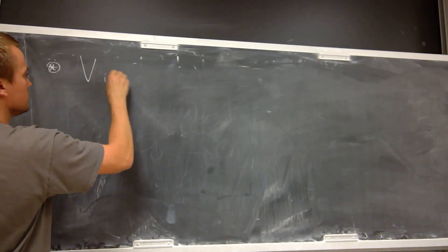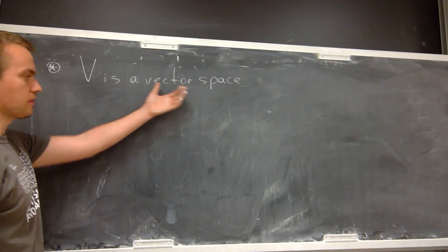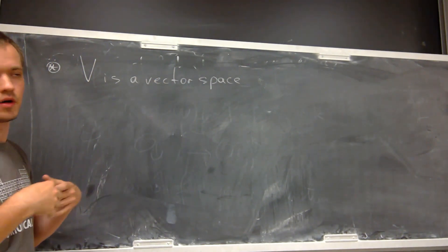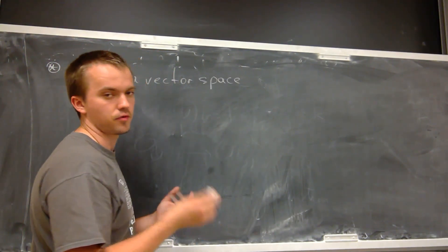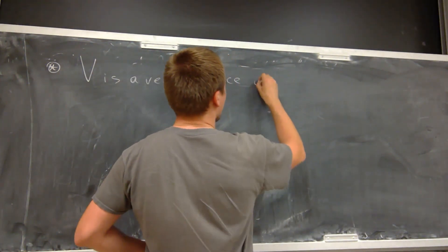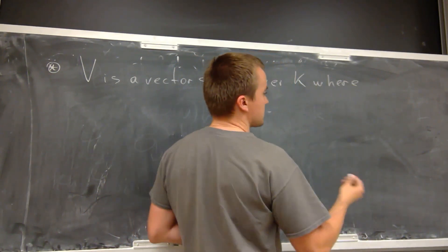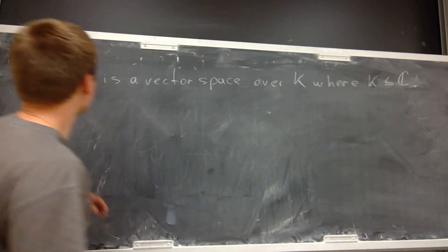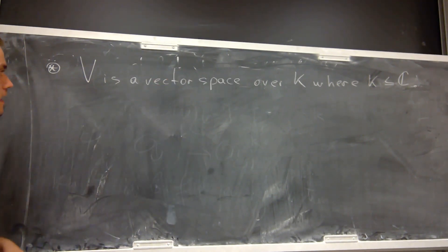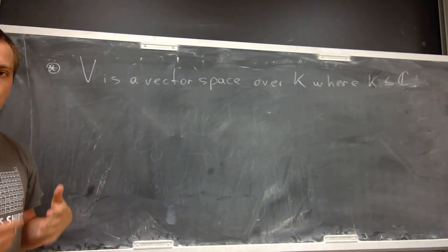Let's say that we have V as a vector space. When we have a vector space, we need to consider it over some field. In this case I will consider it over a subfield of the complex numbers, so it can be the reals or C — it doesn't matter. So over K, where K is a subfield of C.